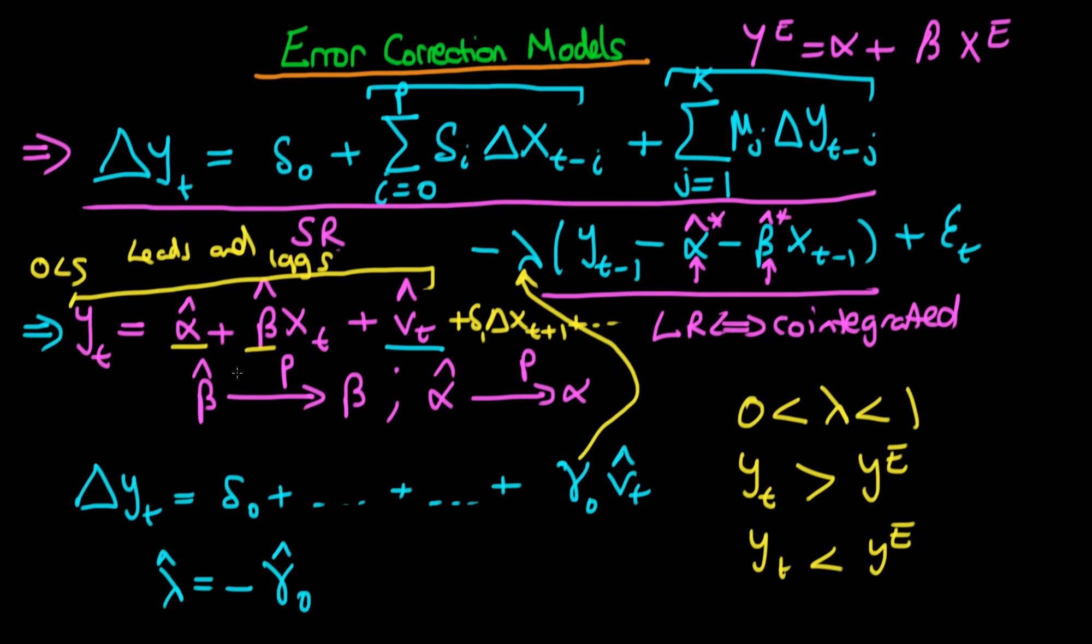But it turns out that asymptotically it doesn't matter whether we use ordinary least squares or leads and lags as an estimator strategy. They are both consistent.